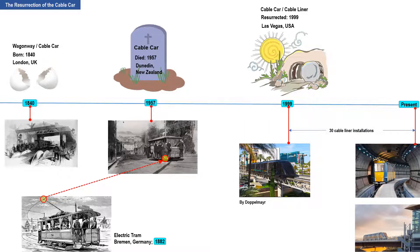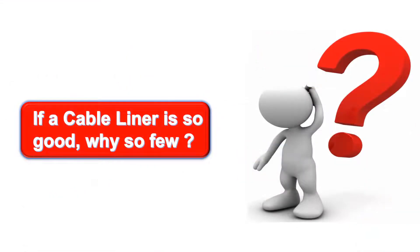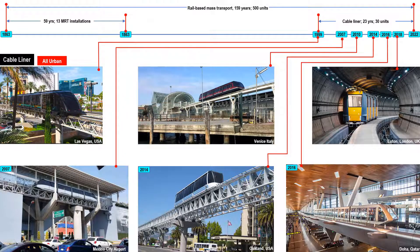In summary, the cable car was born in 1840, died in 1957, and resurrected in 1999. The resurrected cable car has been so successful since it was installed by Doppelmayr in 1999, with about 30 installations since then. Viewers will certainly ask: if a cable liner is so good, why so few are installed? This is because there are 500 rail-based mass transportation systems installed over the last 159 years, whereas there are only about 30 cable liner systems installed — but these have been installed in just the last 23 years.